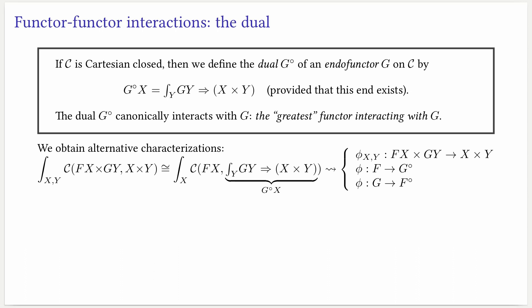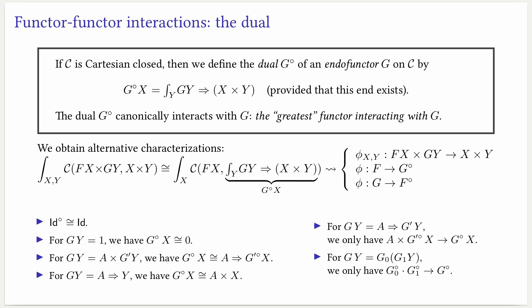In some cases, the dual can be computed easily by following the form of g. The dual of the identity is simply the identity, and for example, the dual of the constant functor 1 is the constant functor 0. Also, when we have premultiplication by a constant, in the dual this will reflect as exponentiation by a constant. Similarly, if we have an exponent functor, then we'll have a product functor. However, this is not always the case — when the thing on the right is not simply the argument but some other functor g', we only have a map in one direction and not an isomorphism. Similarly, when we have composition of functors, we do not obtain that the dual is the composition of its duals, but only a map in one direction.